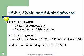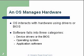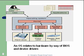The OS manages hardware. The OS interacts with the hardware using drivers or BIOS. Software falls into three categories: device drivers or the BIOS, the operating system, and the application software. Here's the diagram of a user operating the operating system — the OS relates to the hardware by way of the BIOS and the device drivers.